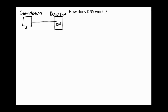That's the simple case. If the recursive DNS server does not have the information in its local cache, it will ask a root server — also called the root DNS — for that information.